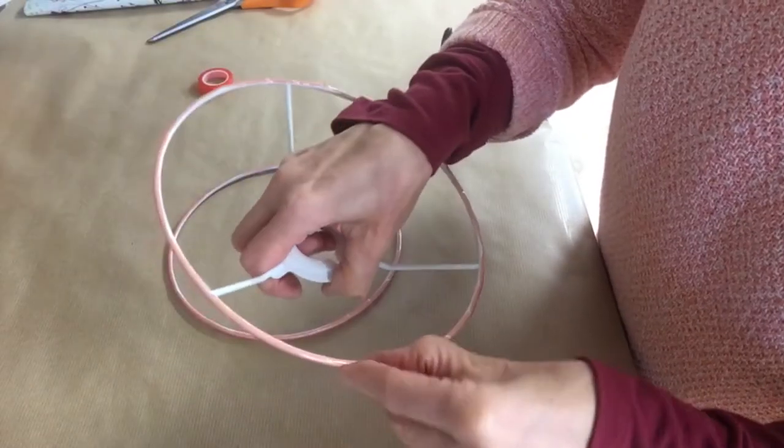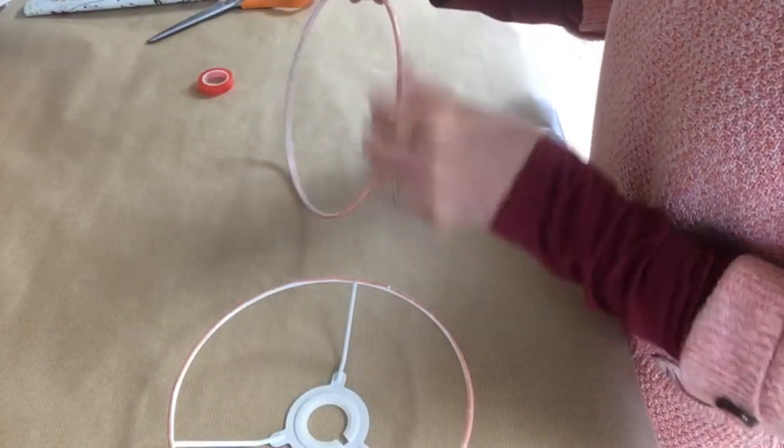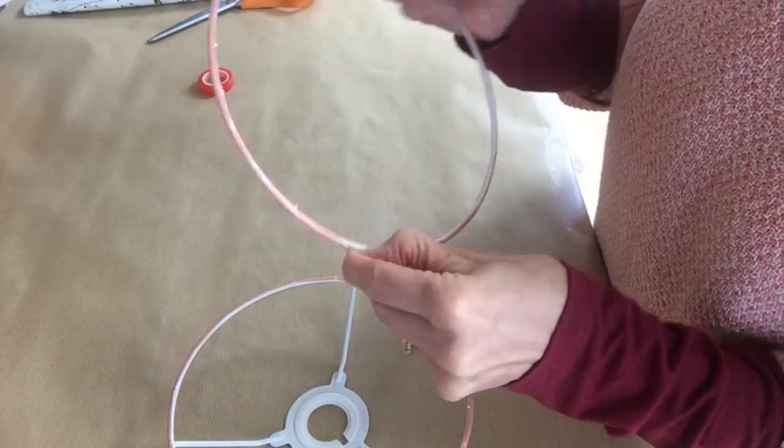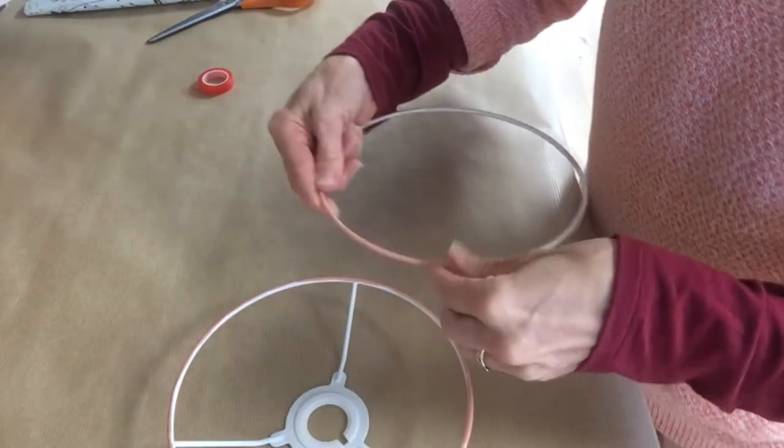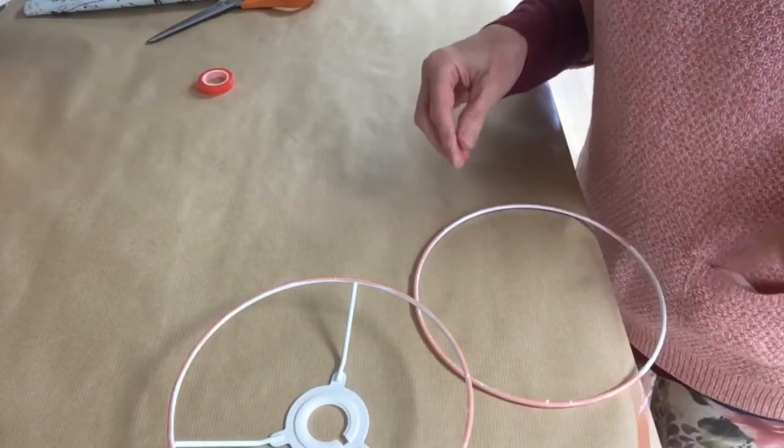You now want to peel back a little bit of the ends. It's very sticky, so once it's peeled back, make sure it doesn't go down on anything. Put it on the edge leaning over the side so it's not going to stick on it.